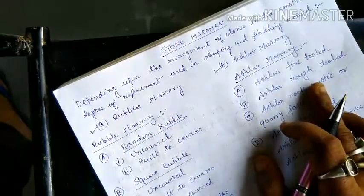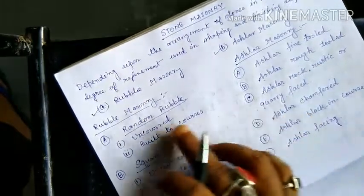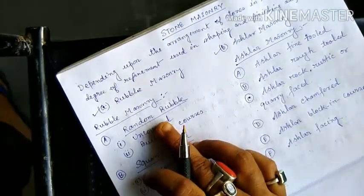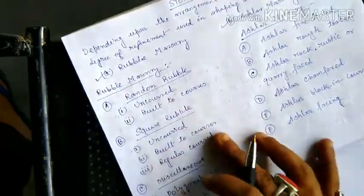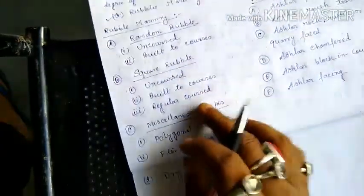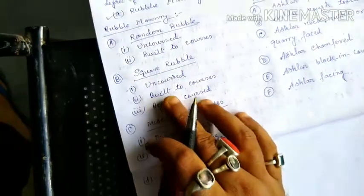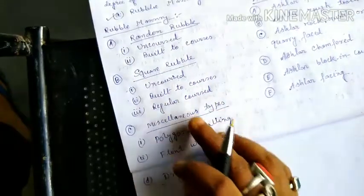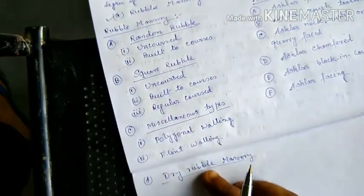For example, the types include: random rubble, square rubble, a miscellaneous type, and dry rubble.